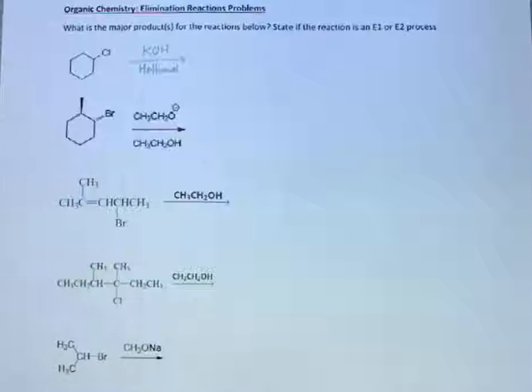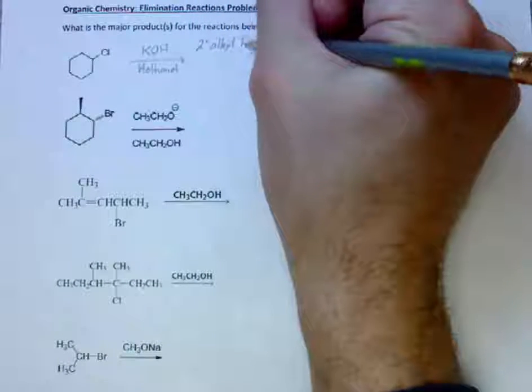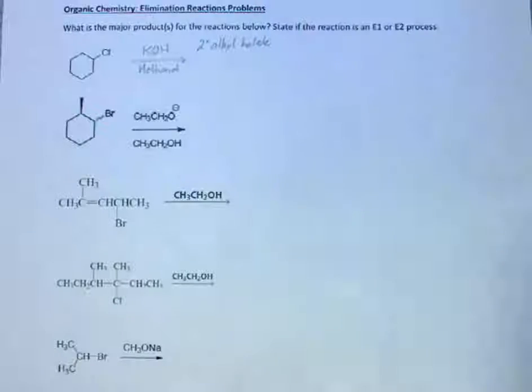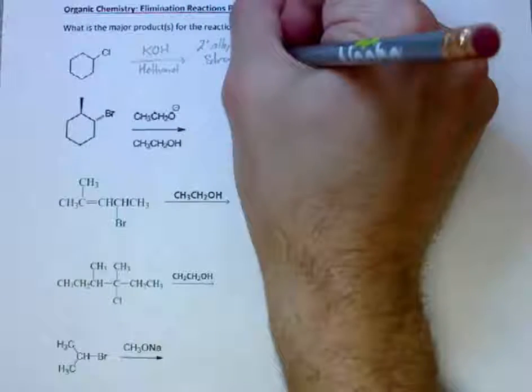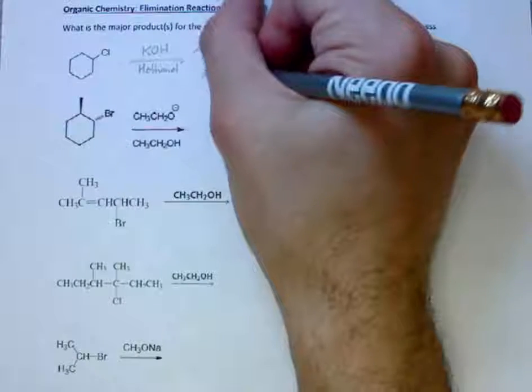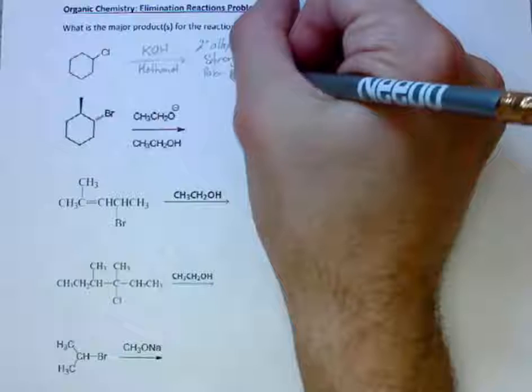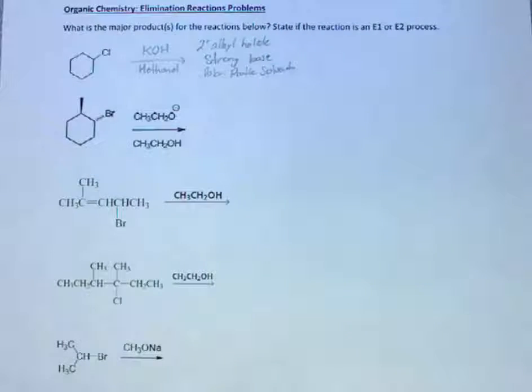For the first reaction we have a secondary alkyl halide with a strong base in a polar protic solvent with a negatively charged nucleophile.